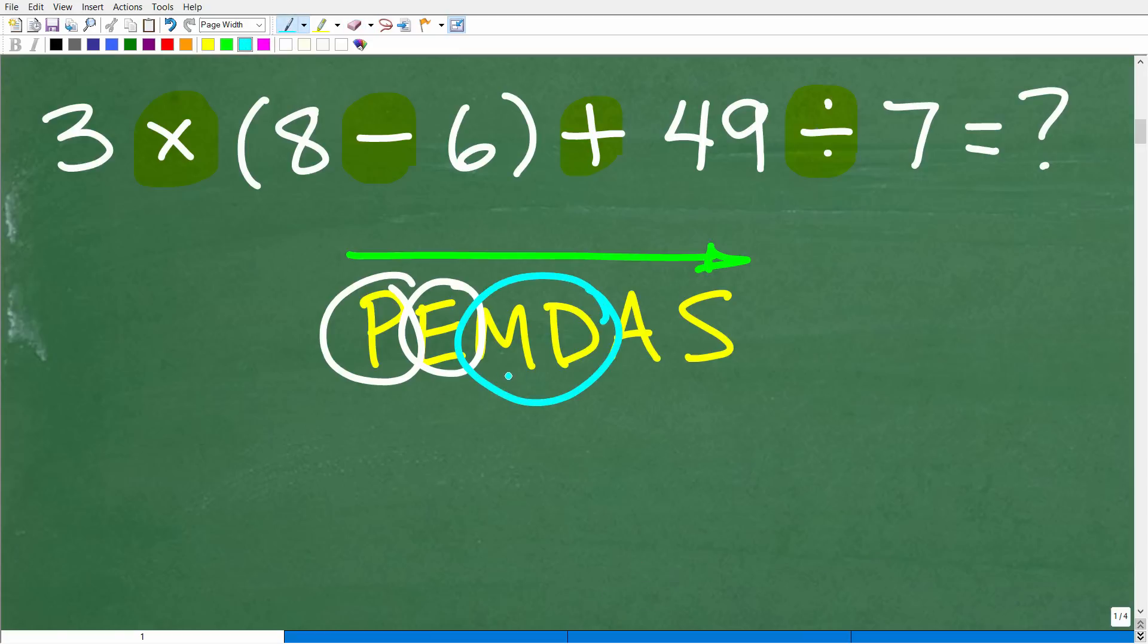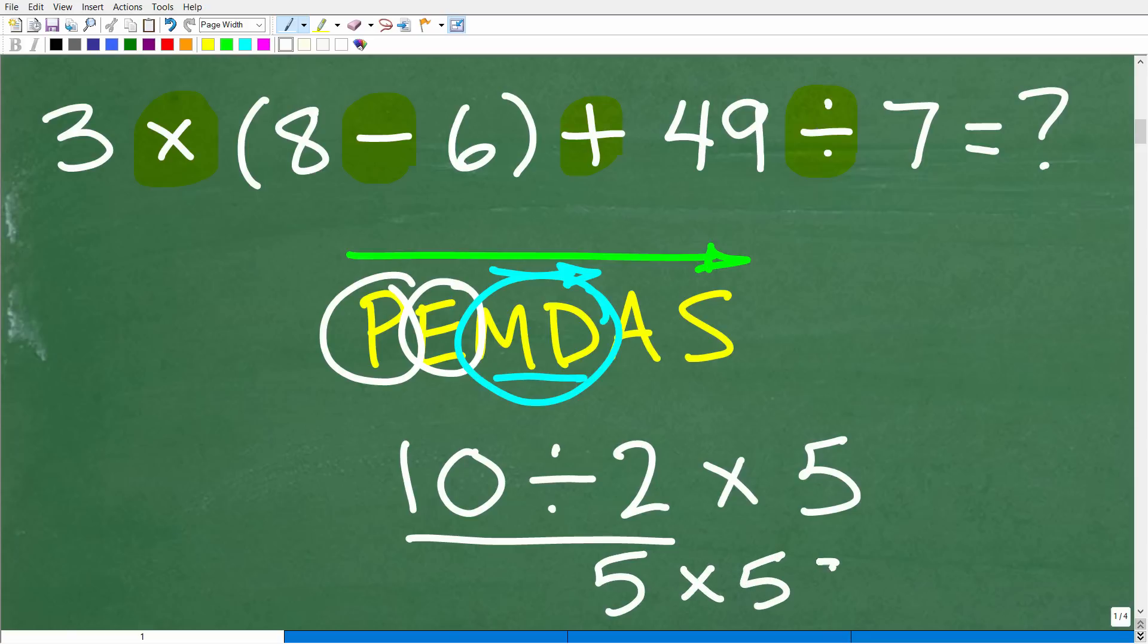Now, so the next step is MD, multiplication or division, whatever you see first from left to right. So going back to our problem here, 10 divided by 2 times 5, what do we see first from left to right? We see division. So 10 divided by 2 is 5. So we have 5 times 5, which is 25.